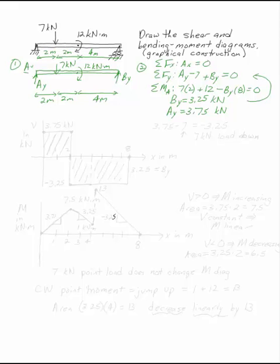then you can draw your shear and bending moment diagrams. The shear diagram starts at the left-hand end at the value of the reaction force there. The reaction force at the left-hand end of the beam is 3.75 kilonewtons. So that's where my V diagram is going to start.